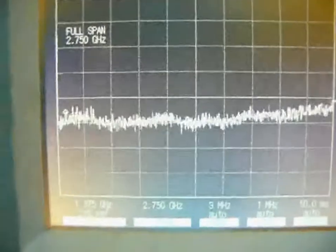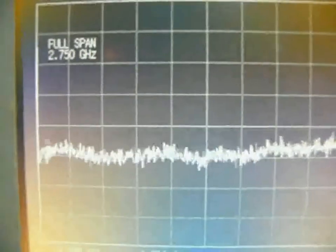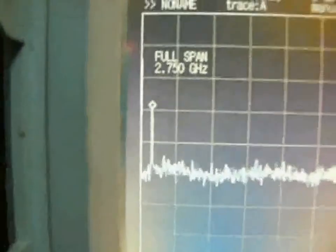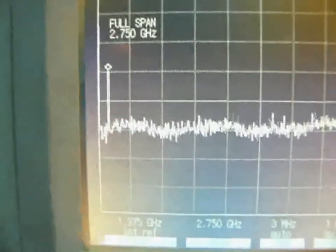Now in the full span, I change to the amplitude here by turning this knob and looking for a signal. Okay, now you can see on the left side we have a signal here. So that's how I find the signal here.